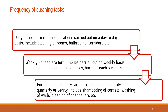The frequency of one task may differ in various areas. For example, shampooing of carpet on a guest floor may happen on a monthly basis since the footfall is quite high and frequent. Whereas shampooing of carpet in a banquet area may happen on a quarterly or even half yearly basis, depending upon the utilization of that particular area.